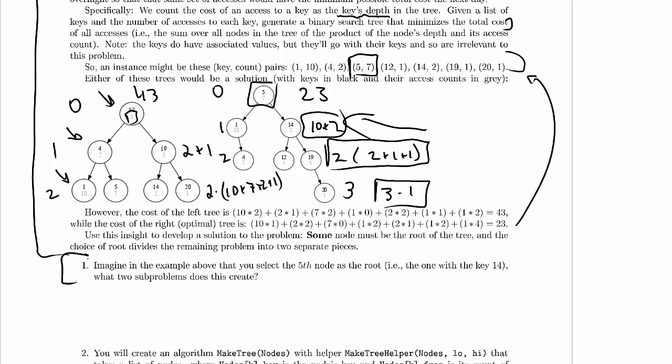Imagine in the example above that you select the fifth node as the root. So that's node 1, node 2, node 3, node 4, node 5. So we're selecting the one with key 14 and axis count 2. What two subproblems does that create?